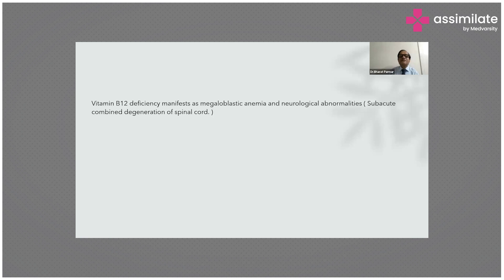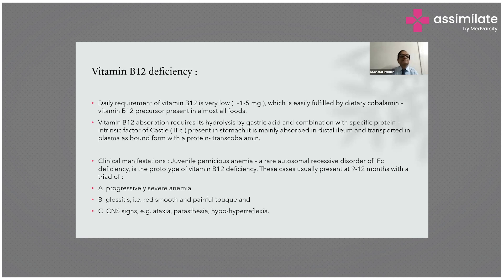The recommended daily allowance of vitamin B12 is 2 micrograms per day in normal children and 2.6 micrograms per day during pregnancy. Vitamin B12 deficiency manifests as megaloblastic anemia and neurological abnormalities — specifically subacute combined degeneration of the spinal cord in adults. The daily requirement is 1.5 micrograms, easily fulfilled by dietary content. Vitamin B12 absorption requires hydrolysis by gastric acid, binding to intrinsic factor (IFC) present in the stomach, and is mainly absorbed in the distal ileum, bound in plasma as transcobalamin.